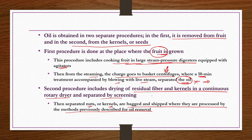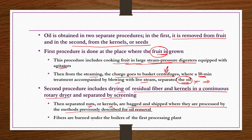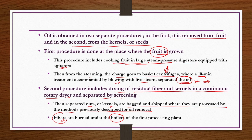The second procedure for palm oil involves drying residual fiber and kernels in a continuous rotary dryer, separated by screening. Separated nuts or kernels are bagged and shipped for processing by conventional mechanical or solvent extraction methods. Fibers are used as solid fuel for the boilers of the first processing plant where oil is extracted from the fruits.